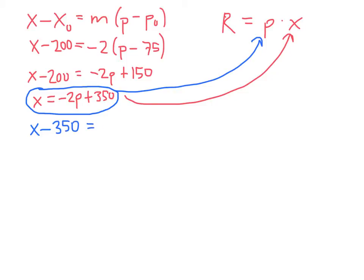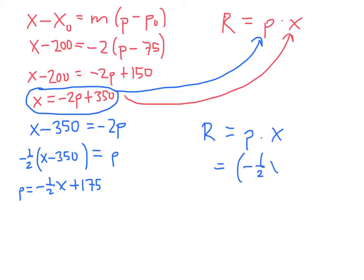So we can do that pretty easily. Let's subtract 350 from both sides, negative 2P. To get rid of the negative 2, I'm going to multiply both sides by negative 1 half. That's going to make my formula be a little bit simpler because it won't have a big ugly fraction in it. So negative 1 half times X minus 350 is going to be P equals negative 1 half X plus 175. So that's my formula for P. And remember, R equals P times X. So R is going to equal negative 1 half X plus 175 times X. And if we multiply that out, we get negative 1 half X squared plus 175 X. So that's our formula for revenue.